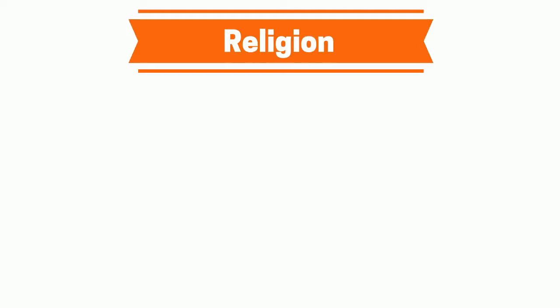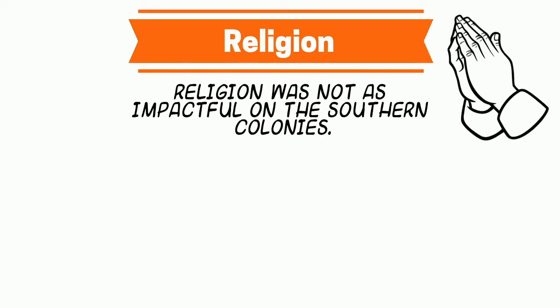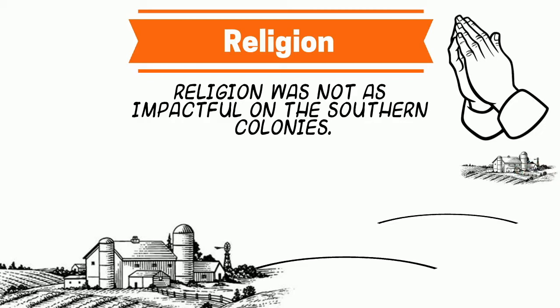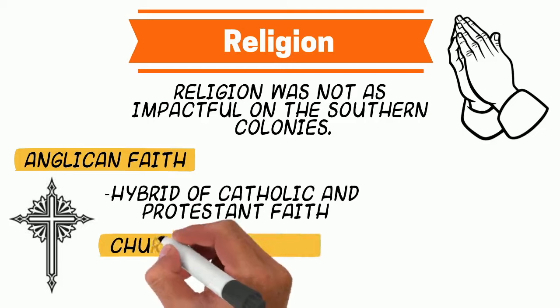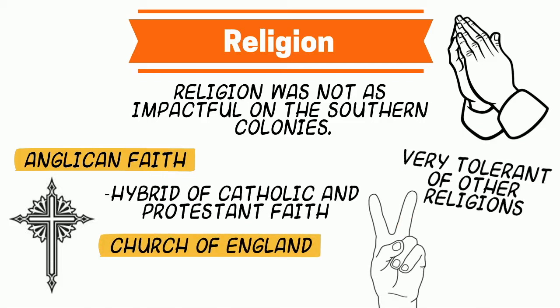Religion in the Southern Colonies was not as impactful as in the other regions. With all the massive farms and plantations, it spread the people out so that they didn't really congregate as frequently as they did in the larger, denser cities of the Middle and New England colonies. However, the Anglican faith — which is a hybrid of Catholic and Protestant faith — was the most prominent religion in this region. They were also very tolerant of other religions; basically everyone was, except for New England.